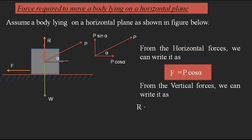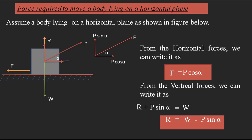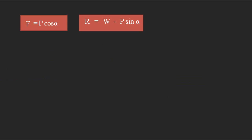From vertical equilibrium: R plus P sin alpha equals W. Writing it in the form of R: R = W minus P sin alpha. Remember this equation as well. So we now have two equations: F = P cos alpha and R = W minus P sin alpha. In the next step, we use the frictional force formula: F = μR, where μ is the coefficient of friction and R is the normal reaction.